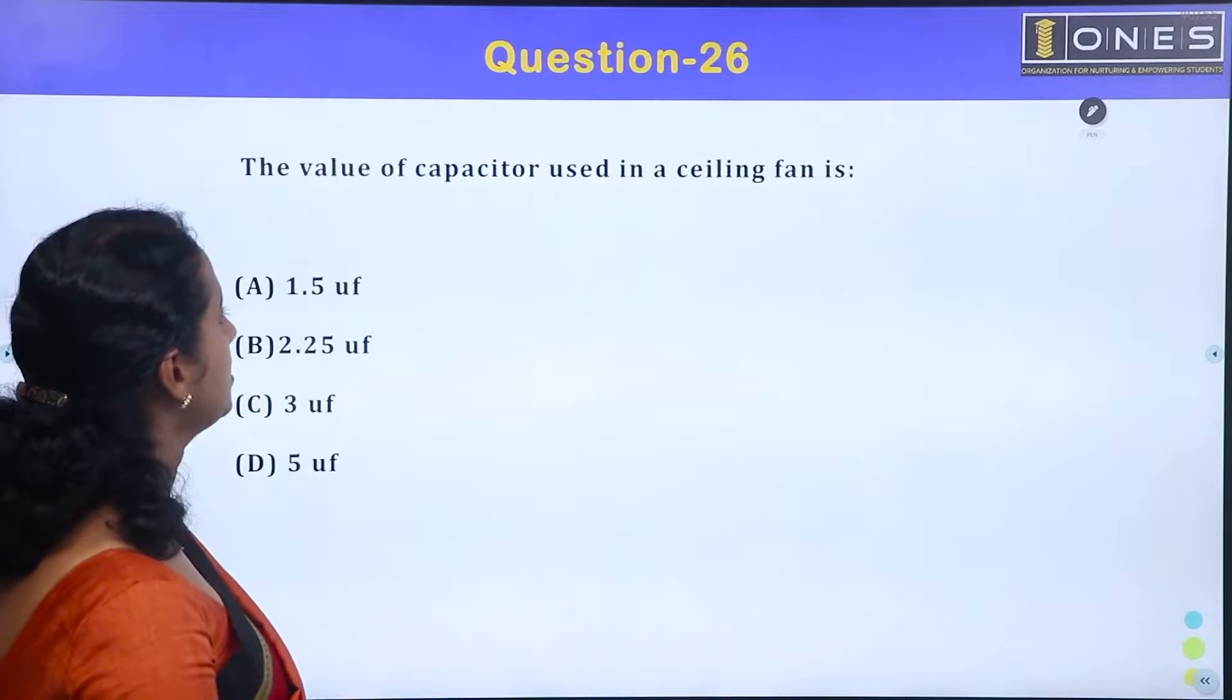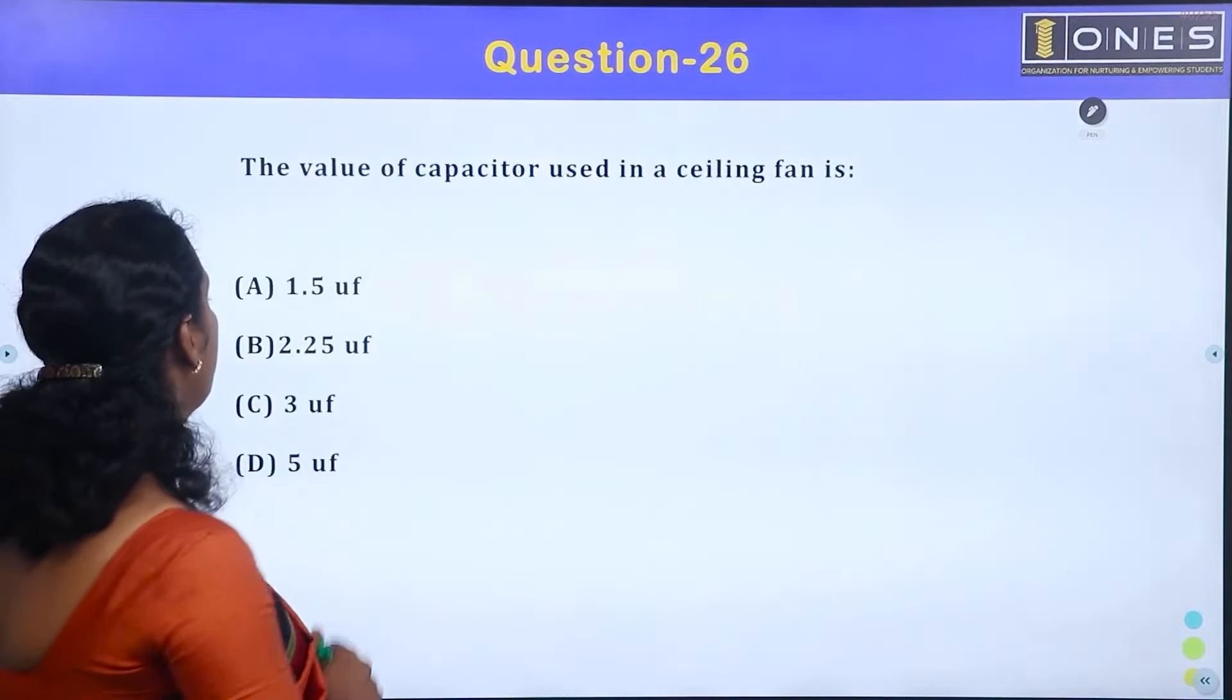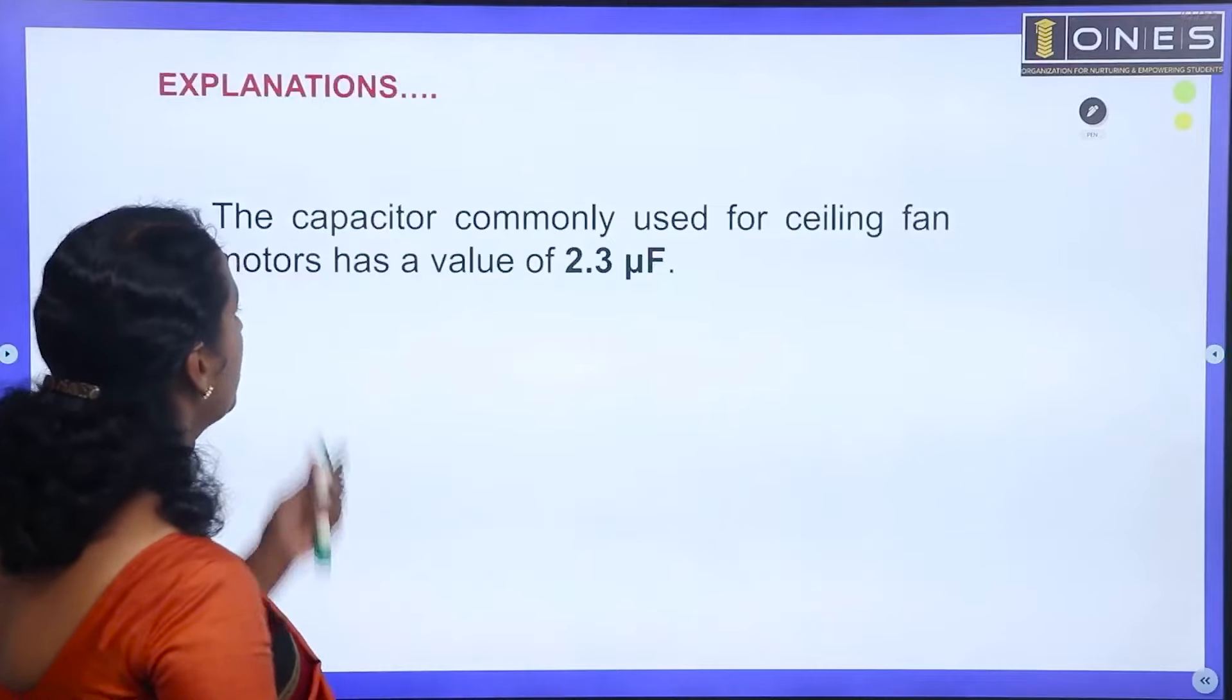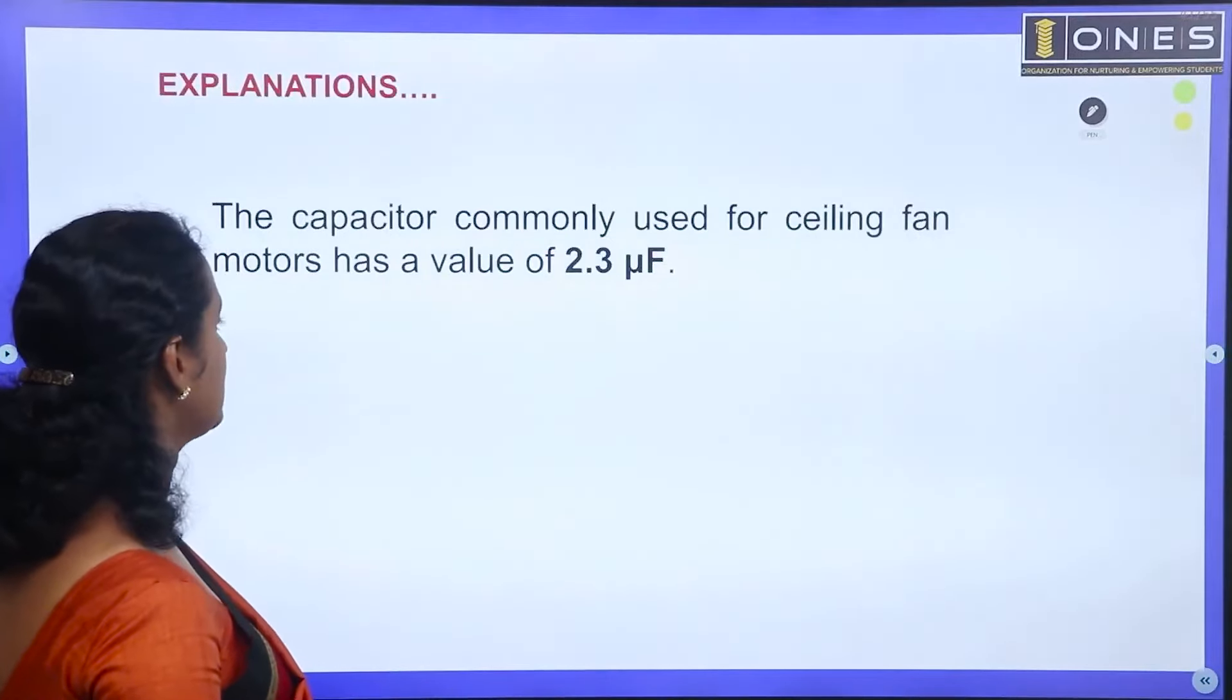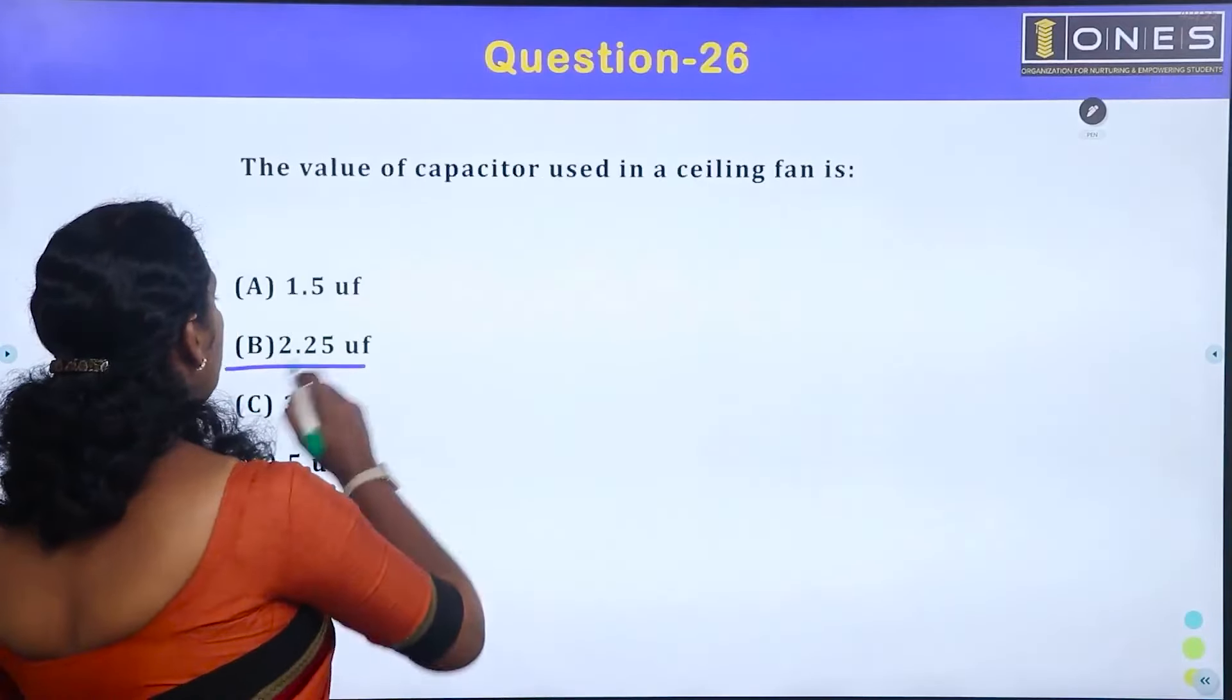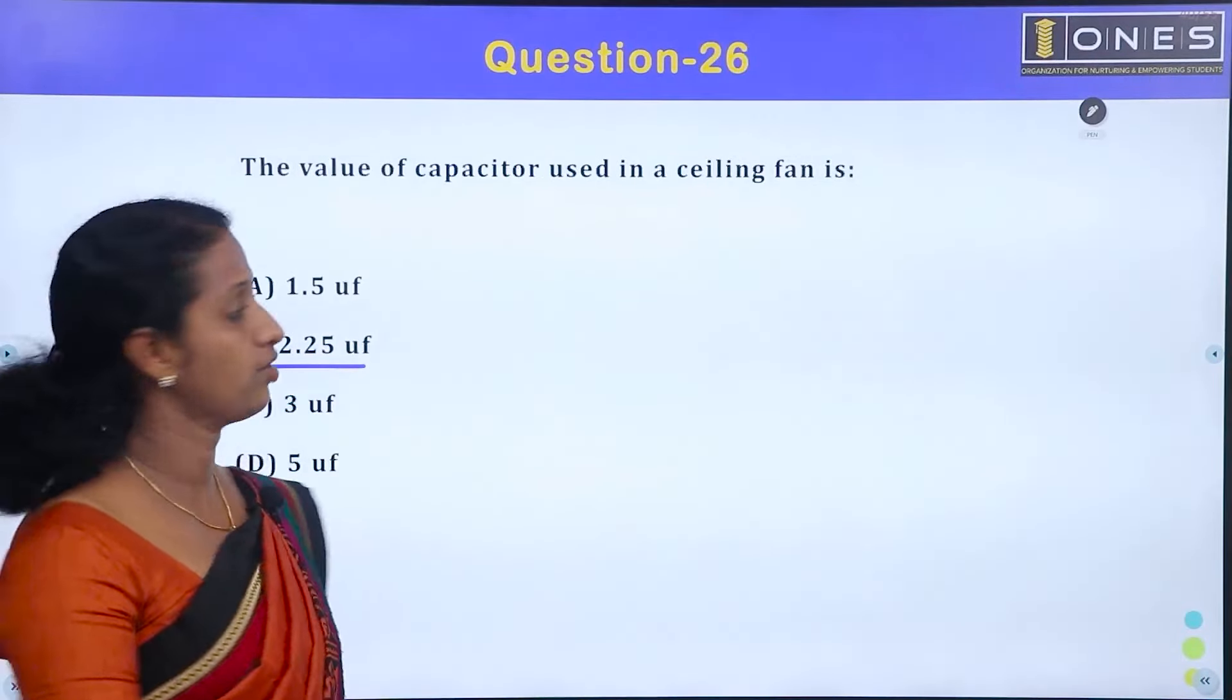The value of capacitor used in a ceiling fan. The value of the capacitor is 2.25 microfarad. The capacitor commonly used over ceiling fans has a value of 2.3 microfarad, but approximately the right answer is 2.25 microfarad.